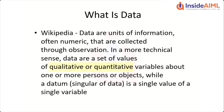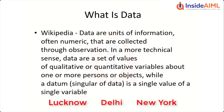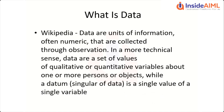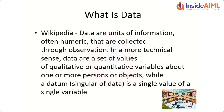This data can be broadly classified into two categories: qualitative and quantitative. Quantitative is measurable — for example, this video has been viewed 10, 100, or 1,000 times. Qualitative tells you context — like from which city it was viewed, such as Lucknow, Delhi, or New York, or which browser was used. A quantitative value tells you a number from which you can judge performance, making it basically a performance-judging metric.